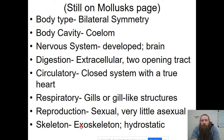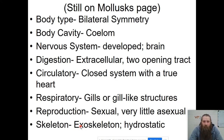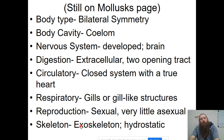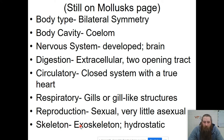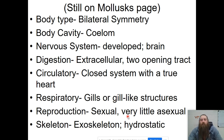They are coelomates with bilateral symmetry, so we will look for a head. They have a developed nervous system with a brain and a two-opening digestive tract. As we get more complicated organisms, you start to see that the more complicated the organism, the more likely it is to have a brain and be bilaterally symmetrical. The circulatory system is closed with a true heart. The respiratory system is either gills or gill-like structures, and reproduction is mainly sexual. They will have both exoskeletons and hydrostatic skeletons in the mollusk family.